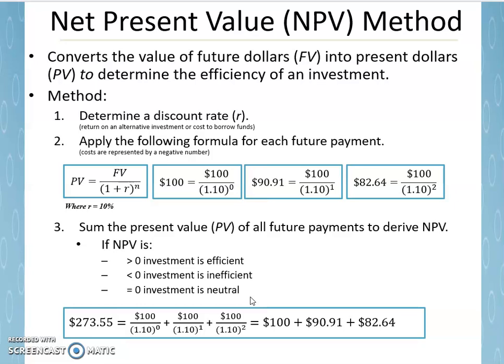It's worth noting that in our example, we were only receiving money — the $100 was received right away, a year from now, and two years from now. That's not realistic, but of course that's going to guarantee that all of these present values are positive and that you have an investment that is efficient. If someone's just giving you money, or if there's no cost to investing and only a return, then it automatically becomes efficient. Of course, that almost never happens.